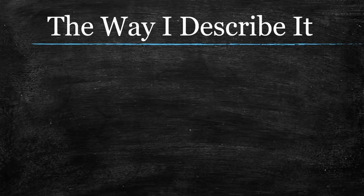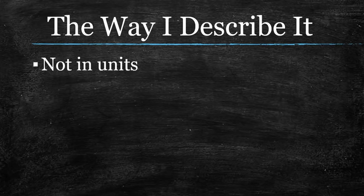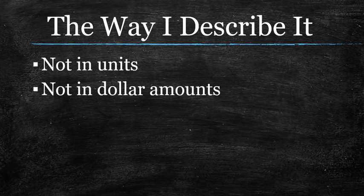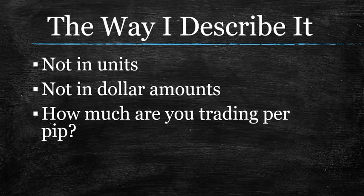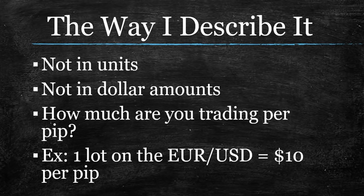Here's how I describe trade entries in terms of how much money to put on a trade. I don't speak in units — I don't say put 10,000 units on the Eurodollar. I don't say it in dollar amounts. I don't speak in lots either, because one lot on the Eurodollar is $10 a pip, but on the Europound, for example, one lot does not equal $10 a pip. So what I really care about is: how much money per pip are you trading? What is your pip value? That's how we're going to talk from this point forward.